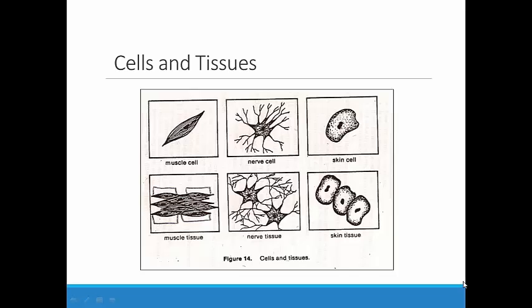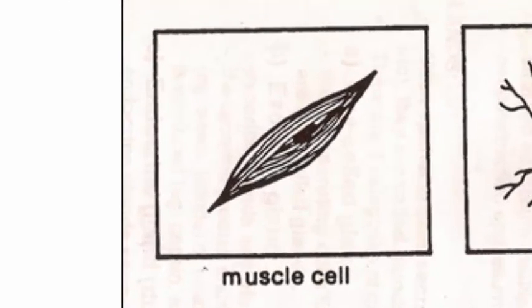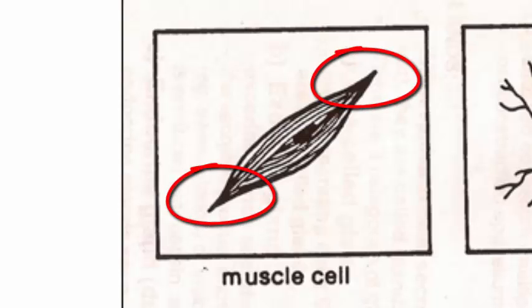Now that you've had the chance to think about form and function as it relates to shoes, let's think about how the same concept is related to cells in the body. Here are pictures of three of the four cells that you viewed under the microscope during the lab. They look very different from one another, and you can see how the cells form tissue with other similar cells. First of all, what does muscle tissue do in the body? It contracts and allows movement to occur. What is it about the shape or structure of the muscle cell that allows the tissue to contract? Well, these muscle cells are tapered near the end, which allows them to overlap. This will help the muscle shorten and lengthen when it is in use.